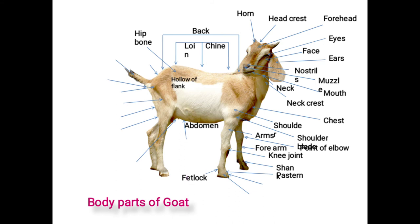Then the fetlock: the portion between the pastern and coronet. Coronet: the portion covered with hair just above the hoof called the coronet. Then hooves or dewclaws: the lowermost hard portion of the legs is called the hoof, and there are two digits of the hoof. The gap between the digits is termed the inter-digital space. The hard back portion is the heel, the front portion is the toe, and the lowermost flat portion is called the sole. The hard finger-like projection on the backside of the pastern is called the dewclaw.